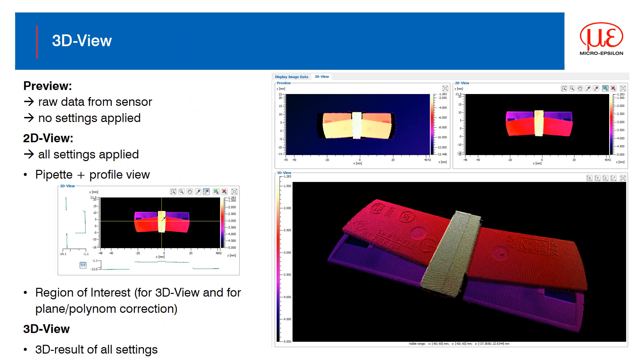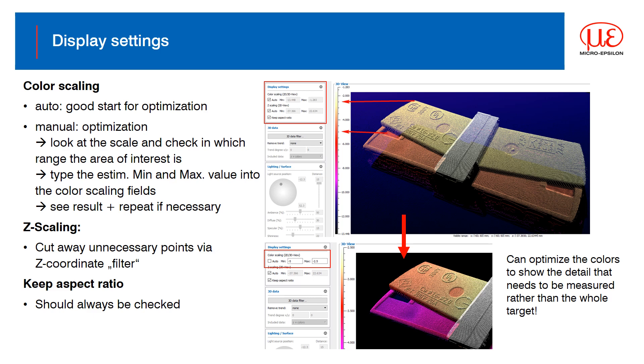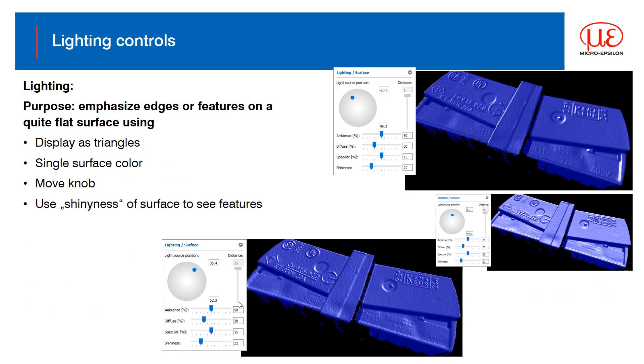When data is captured, it is presented in the main 3D view area along with a preview image showing raw data from the sensor without any settings applied, and a 2D plot of the captured point cloud, which can be sectioned to see the cross profile in X, Y and Z. All the views can be maximized if needed. The display settings field allows for color adjustment and scaling. This can help visualize and understand the data that you have captured. Whilst lighting control allows you to enhance edges or features even on flat surfaces. But all this is just for your own visual benefit.